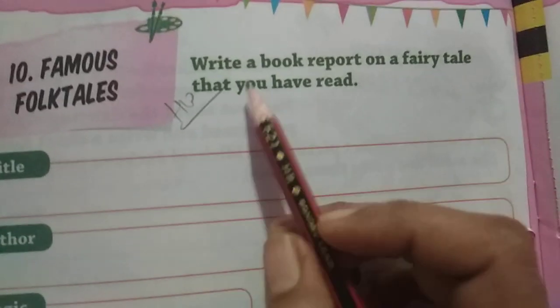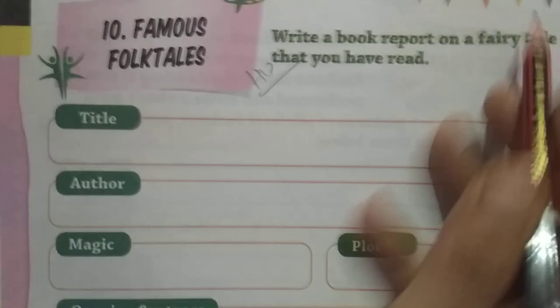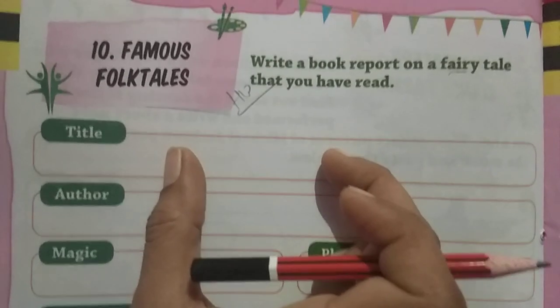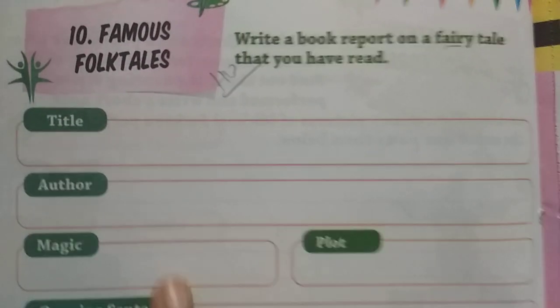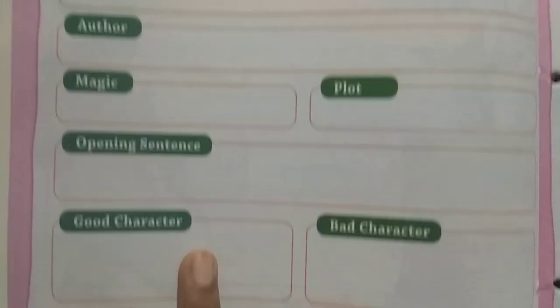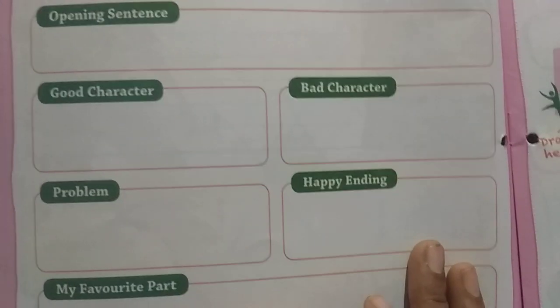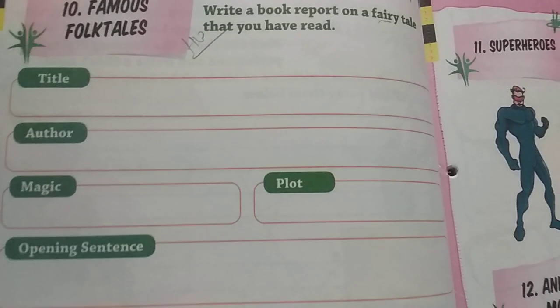Now come to our scrapbook. Write a book report on a fairy tale or folk tale that you have read. Include the title, the writer, the plot, the opening sentence, who was the good character, who was the bad character, what was the problem, how was the happy ending, and what was your favorite part. This is the work you have to complete in the homework. Thank you everyone.